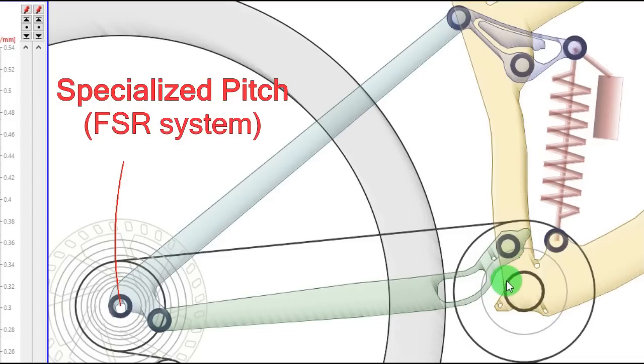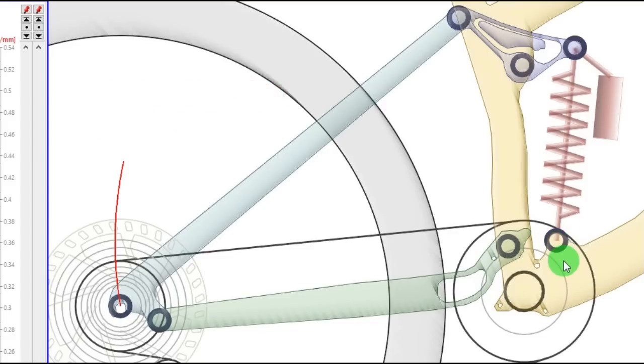That means that you cannot say that FSR is the best system for downhill or for climbing because you can have totally different behaviors by just moving a little bit these pivots and still be an FSR system. The same applies with the VPP systems and other types of systems.